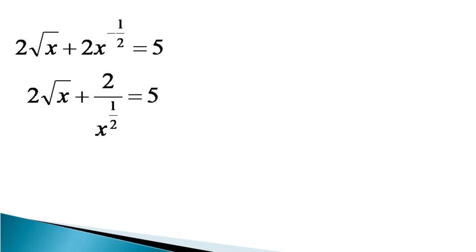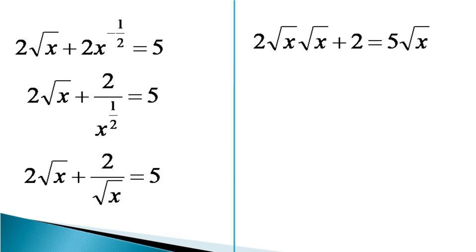This equation can also be written as 2√x plus 2 by √x equals 5. Multiplying both sides by √x, the equation transforms to 2√x times √x plus 2 equals 5√x. This can also be represented as 2(√x)² plus 2 equals 5√x.